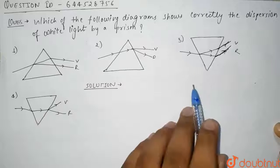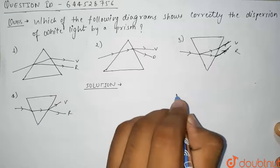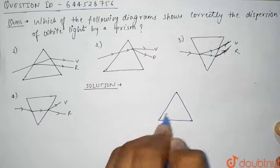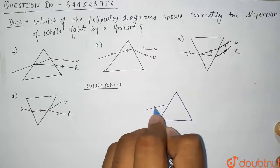Now see guys, how the process is. Let us take a prism. So initially if a ray of white light will come like this, this is the ray of white light.